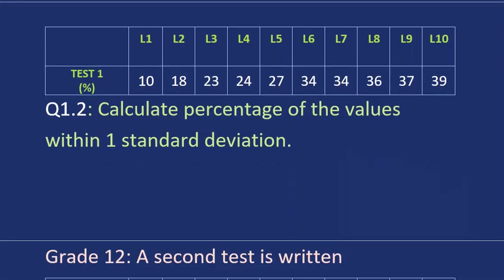Calculate the percentage of values that are within one standard deviation. So within one standard deviation means that we need the lower end and the upper end. So we're going to take our mean value for the lower end. Remember our mean value was 28,2. And we're going to subtract the standard deviation. And then for the upper end, we'll take our mean value, but now we're going to add the standard deviation.